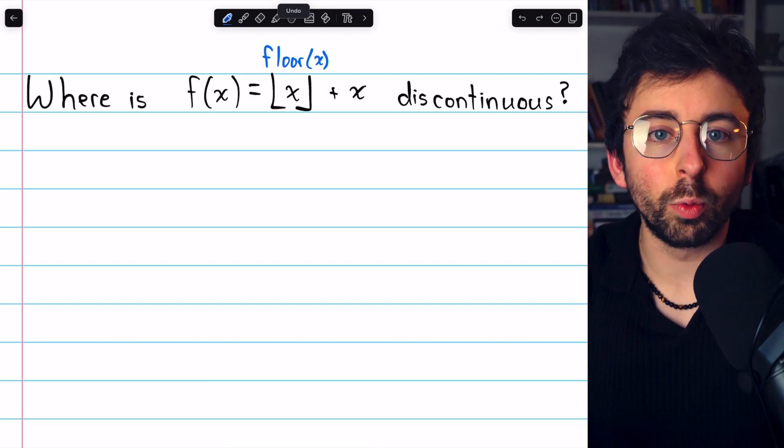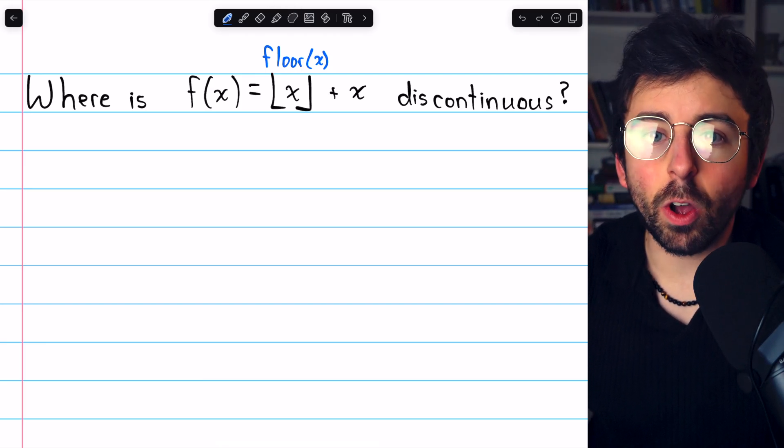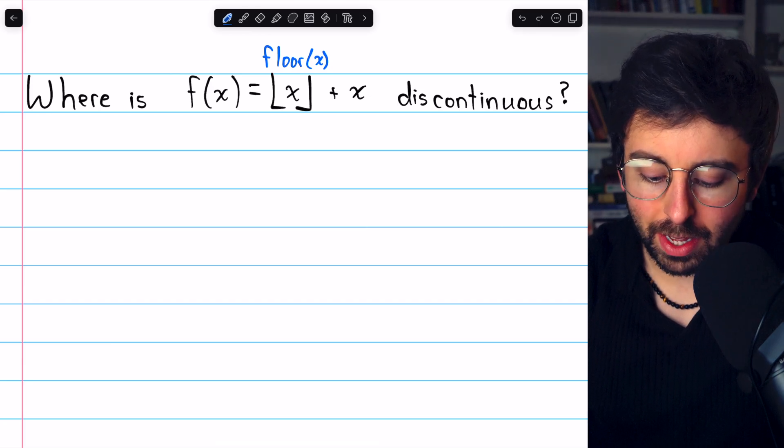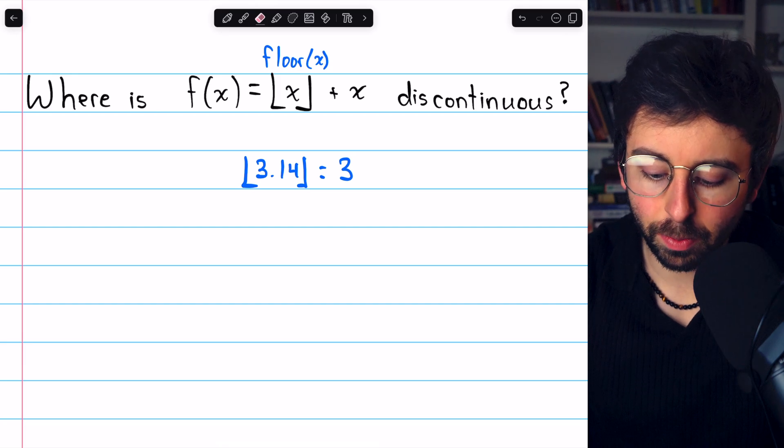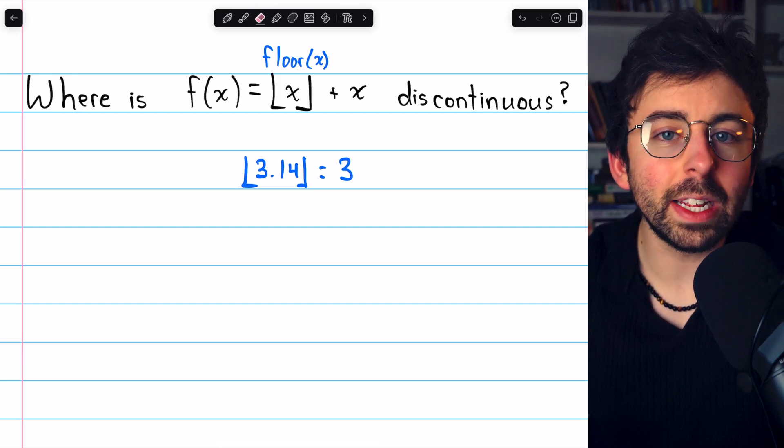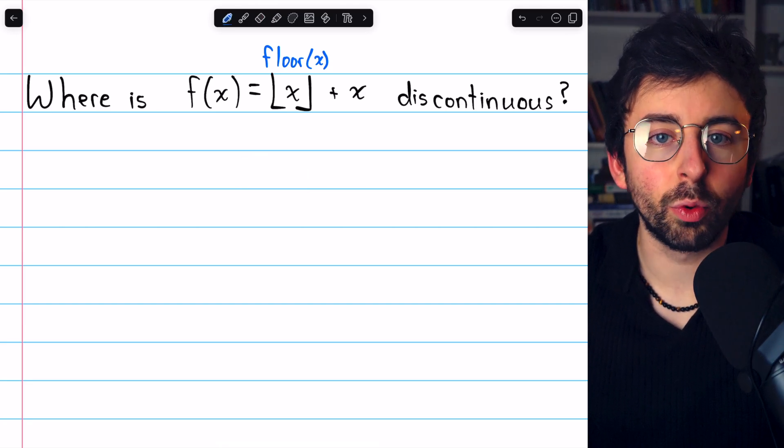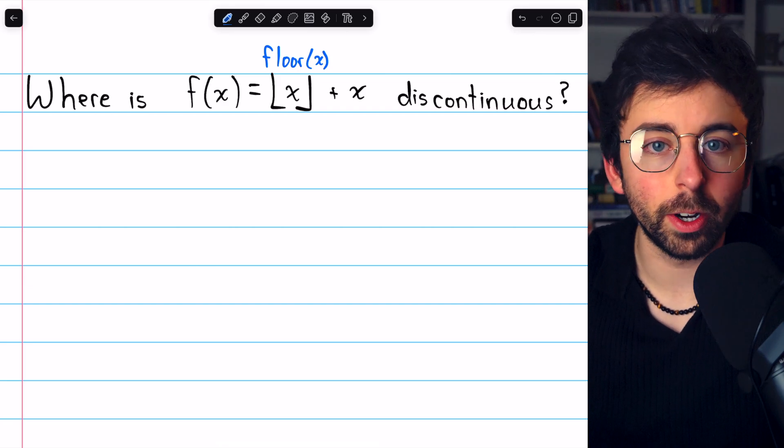The floor function, as a quick recap, just rounds the input down. It's called the greatest integer because the floor of 3.14, for example, equals the greatest integer that's less than or equal to the input. So it just rounds it down to 3. That's how the floor function works.